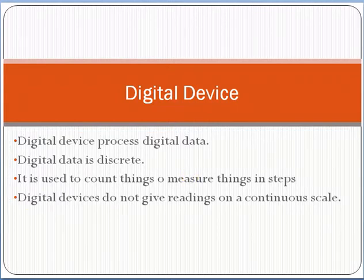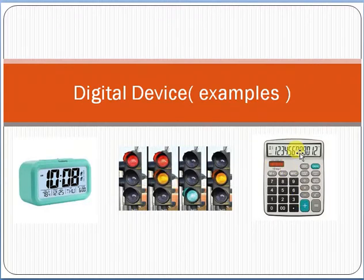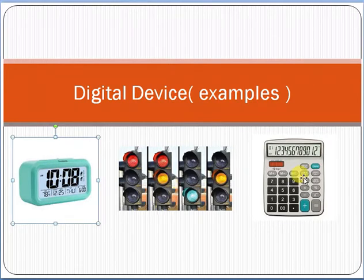Let me give you an example of a digital device. This clock is a digital clock — if you see from here, it's increasing in a discrete manner, step by step. This traffic light is discrete or digital, and this calculator is also digital. So the digital device processes digital data, which is discrete — counting things step by step.